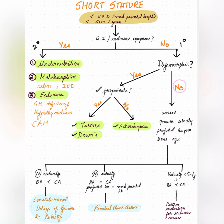If there are no dysmorphic features, you need to assess three important things: growth velocity, projected height, and bone age. Growth velocity is simply how much the child grows per year. Projected height is equivalent to the mid-parental height. Bone age reflects developmental progress — for example, a five-year-old child may have a bone age of only four years.